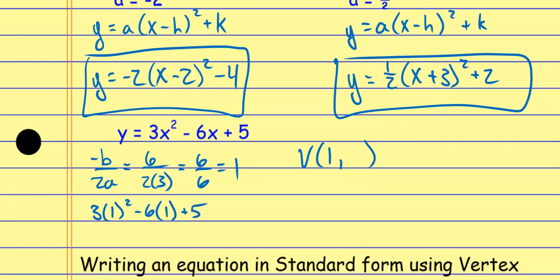I do some simplifying: 1 squared is 1. Then I do the multiplication — that's 3 minus 6 plus 5, which gives me a positive 2. So that's my k value. Now I have my vertex: it's 1, 2.